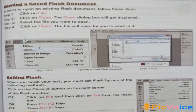Exiting Flash: When you finish your task, you must exit Flash by one of the following methods: click on the Close button on the top right corner of the Flash window; or click on File and then click on Exit from the menu bar; or press Ctrl + Q keys; or press Alt + F4 keys.